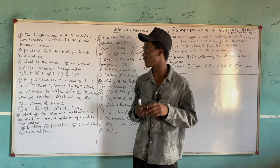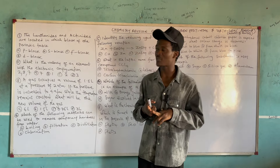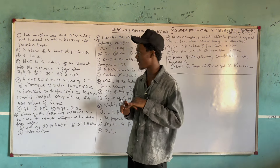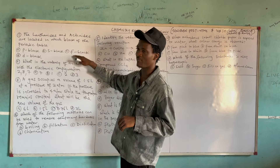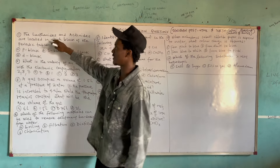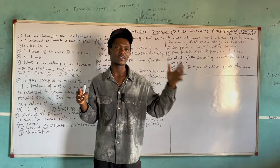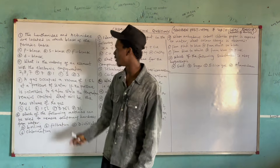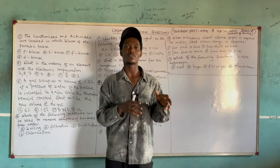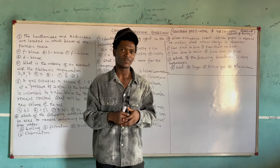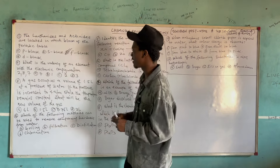We have four types of orbitals: the S orbital (sharp), the P orbital (principal), the D orbital (diffuse), and the F orbital (fundamental). Elements in the lanthanide series begin with lanthanum and end in lutetium. The actinide series begins with actinium and ends with lawrencium. So these elements are regarded as F block elements, and the correct answer is option C.